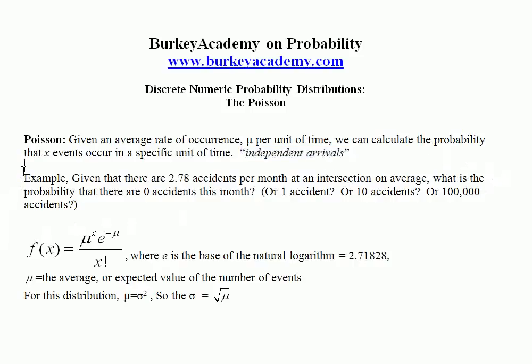Now the example I want to work through here is using some data that I collected on accidents at an intersection. So I collected some data on hundreds of intersections and their accident rates over time. If we just look at one of those particular intersections, I calculated that there were on average 2.78 accidents per month.